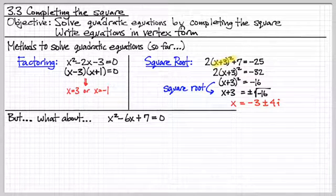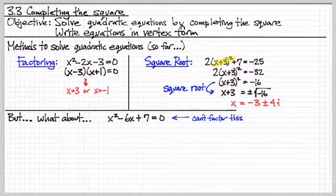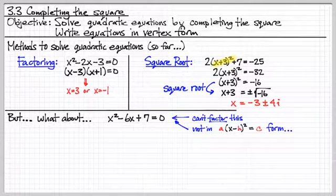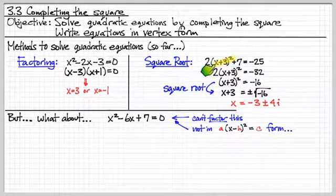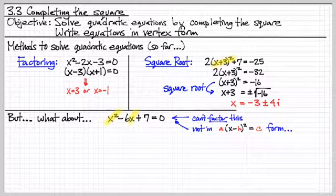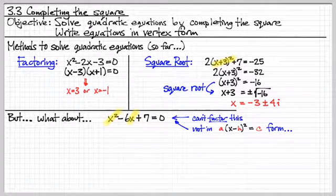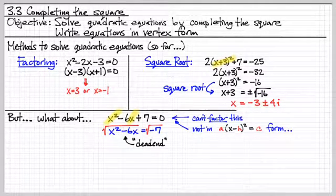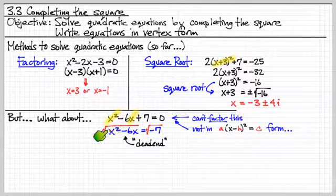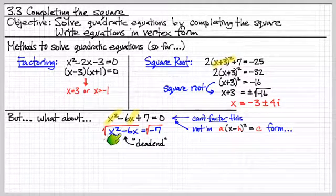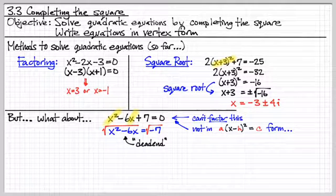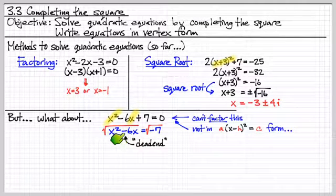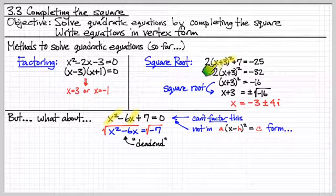But what about something like this? We can't factor it. It's not in a nice form like this one up here. We have an x squared term, we have an x term. We could try to move the seven to the other side, but we can't just take the square root of the left-hand side. We hit a dead end. So what do we do? It would really be nice if we could somehow turn this into a perfect square like that.